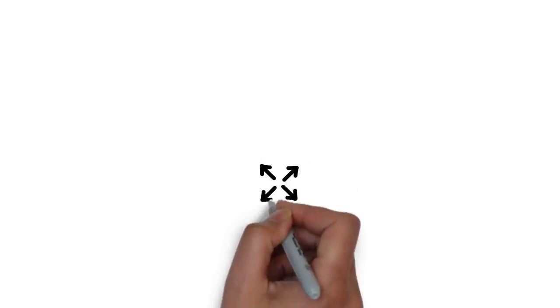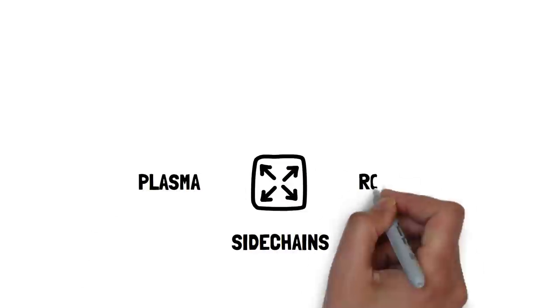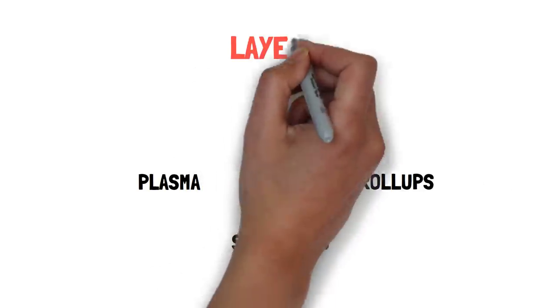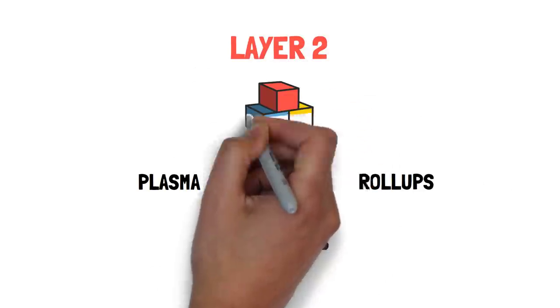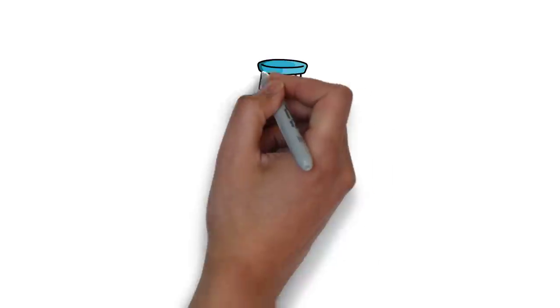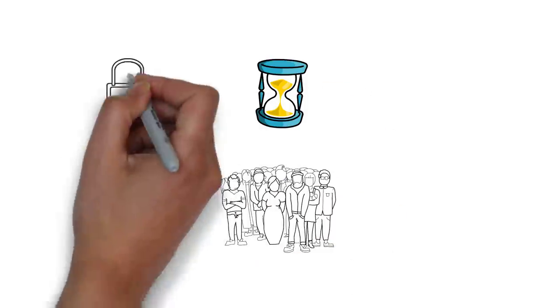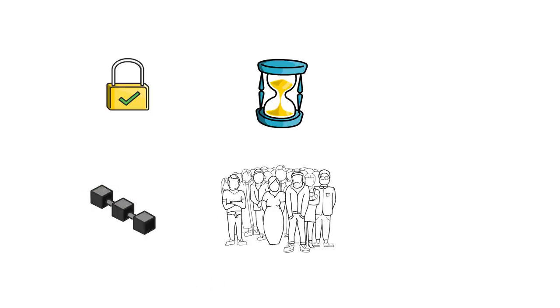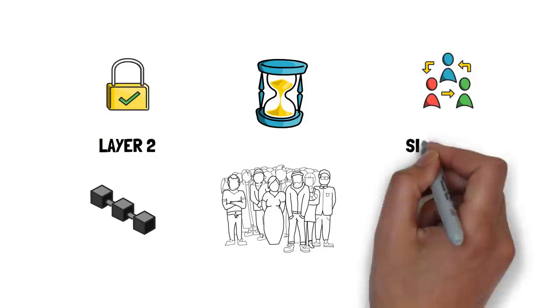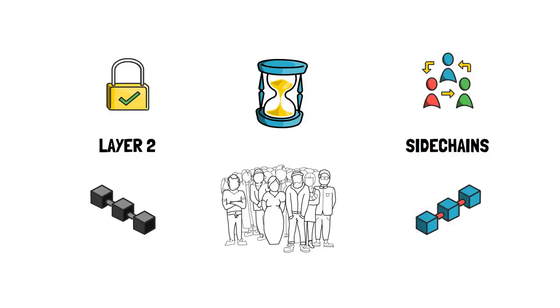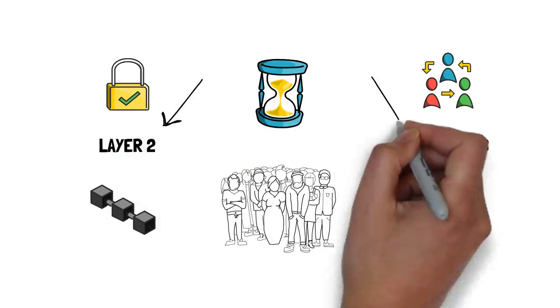Initially, all scaling solutions such as sidechains, plasma and rollups were classified as layer 2 solutions as they are built on top of layer 1. After a while, the Ethereum community started differentiating between scaling solutions fully secured by the Ethereum main chain, layer 2, and other scaling options with their own consensus mechanisms – sidechains. At the moment, pretty much all scaling solutions are classified as either one or the other.